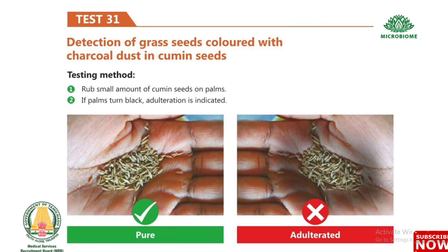Test 31: Detection of grass seeds colored with charcoal dust in cumin seeds. Rub a small quantity of cumin seeds on the palms. If the palms turn black, adulteration is indicated.